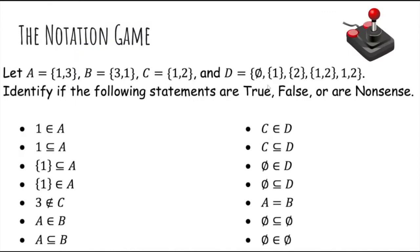Let's do some examples. Given these defined sets, are these statements true, false, or nonsense? First: one is an element of A — clearly true because A contains one and three. What about one is a subset of A? This is nonsense because one is not a set, it's a number, so it can't be a subset. What about the set containing one is a subset of A? Every element of this set, which is just one, is in A, so this is true. What about the set containing one is an element of A? A contains no sets as elements, so this is false.